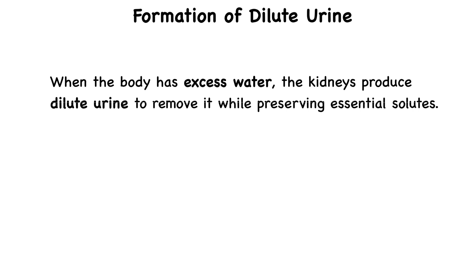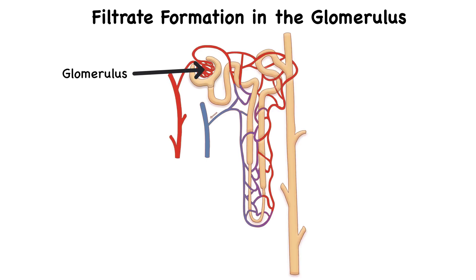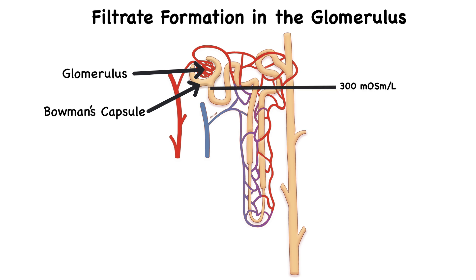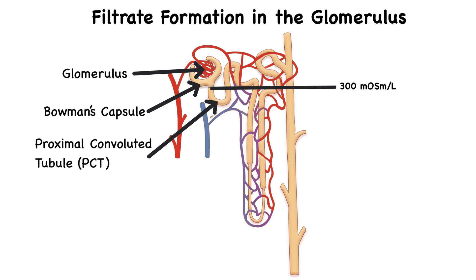Let's first talk about the formation of dilute urine. When the body has excess water, the kidneys produce dilute urine to remove that excess water while preserving essential solutes. This happens through three main steps in the nephron. The first is filtrate formation in the glomerulus. This process begins at the glomerulus, where filtration occurs just like in normal urine production. The fluid moves from the glomerulus into Bowman's capsule, and the filtrate at this stage has a similar osmolarity to blood plasma, about 300 milliosmoles per liter. As the filtrate moves through the proximal convoluted tubule, solutes are reabsorbed and water follows, so at the end of the proximal convoluted tubule, we still have a similar osmolarity of about 300 milliosmoles per liter.